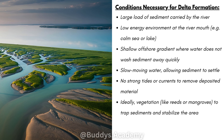You then need a low energy environment at the river mouth — things like a calm sea or calm lake, meaning the sea must have a very weak current. You need a shallow offshore gradient where water does not wash sediment away quickly. You need slow moving water which allows sediment to settle, because fast moving water constantly moves sediment and doesn't allow it to settle. There must be no strong tides or currents, as these remove deposited material. Ideally, you need vegetation like reeds or mangroves to trap sediments and stabilize the area.